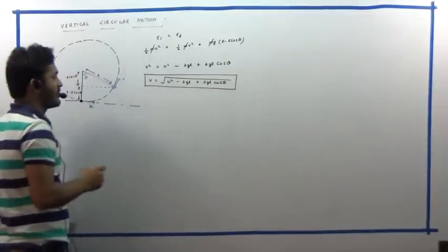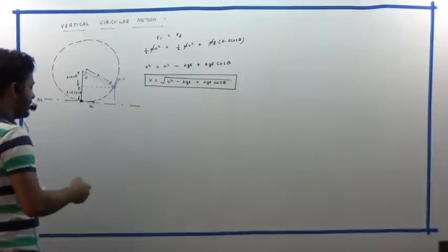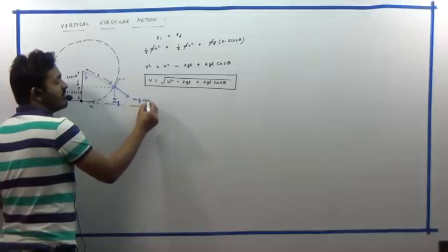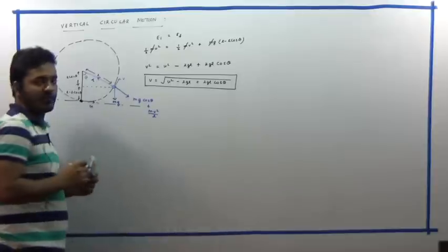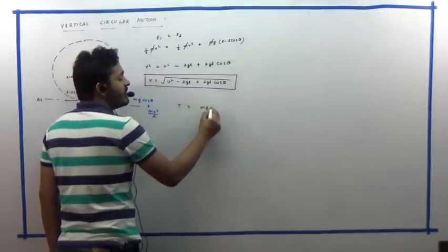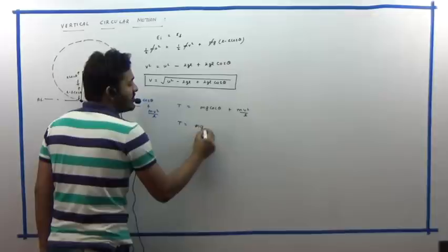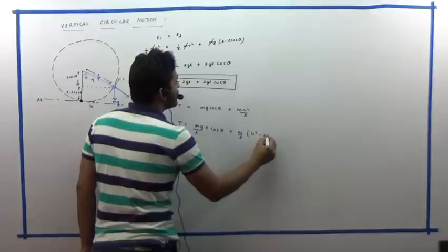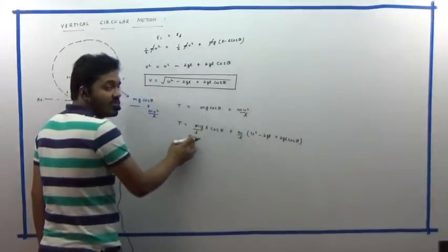Checking the force components on the mass: mg acts downward, giving a component mg·cosθ toward the center, balanced along with mv²/L by the tension T. Writing the tension equation: T = mg·cosθ + mv²/L. Substituting v² = u² − 2gL + 2gL·cosθ into this expression for T.